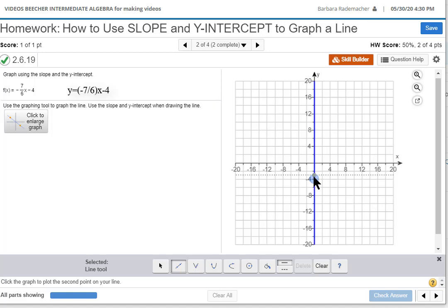From here we're going to go down 7: down 1, down 2, down 3, down 4, down 5, down 6, down 7. And to the right 6, because now the 6 is positive. The 7 was negative.